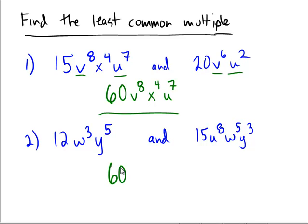What do we need to include in terms of the U's? There are no U's on the left, but we do need to include the 8 U's that we see on the right. How many W's? On the left we see 3, and on the right we see 5, so we're going to include 5 because that's the larger number. And then finally, how many Y's? On the left we have 5, and on the right we have 3, so we're going to include 5 because we're going to include the highest number that we can. That creates the least common multiple.